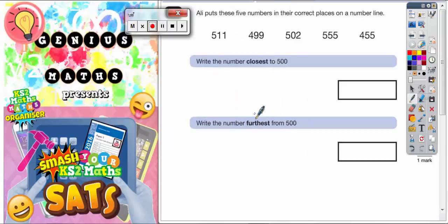Question number one. Ali puts these five numbers in their correct places on a number line. And we've got to write the number that's closest to 500 and also the number that's furthest away from 500.